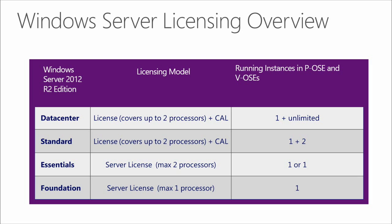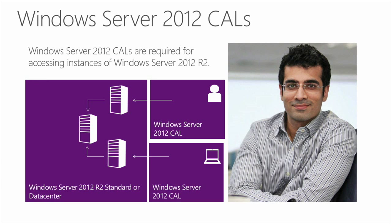Essentials and Foundation editions are server licenses. Essentials covers up to two processors and Foundation covers one processor. These models are ideally suited for small businesses. Every user or device that accesses an instance of Windows Server 2012 R2 requires a CAL, or client access license, which are designed to be used exclusively with a particular server.